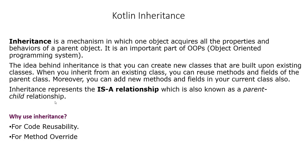We use inheritance for two main reasons: code reusability and method overriding. Code reusability means we implement all the methods and fields in our super class — the car class — and reuse that same code in our child classes without rewriting everything. Method overriding may seem confusing at first, but practicing it will give you a better understanding of how inheritance works.